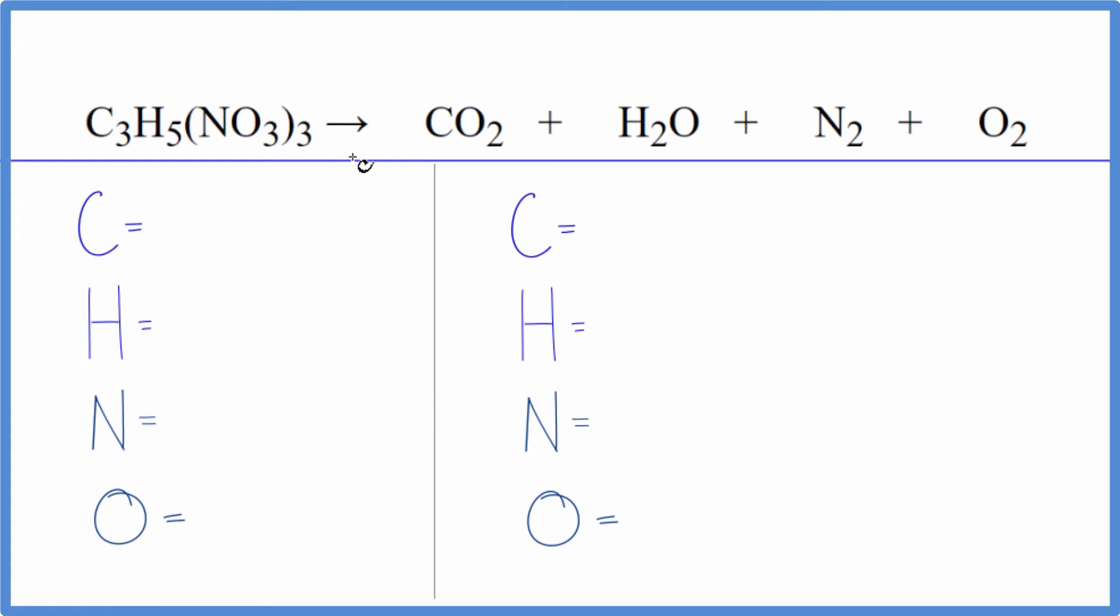To balance the equation we'll use a little bit of a trick later on, but for now let's count the atoms up. Three carbons, five hydrogens, three times one, this three goes to everything here, so three times the one nitrogen, three of those, three times three, nine oxygens.